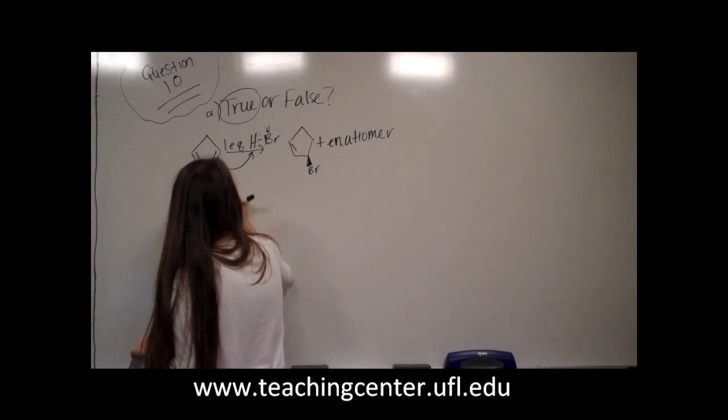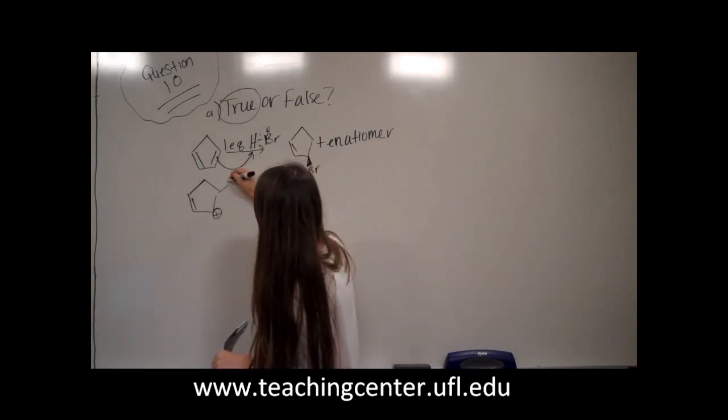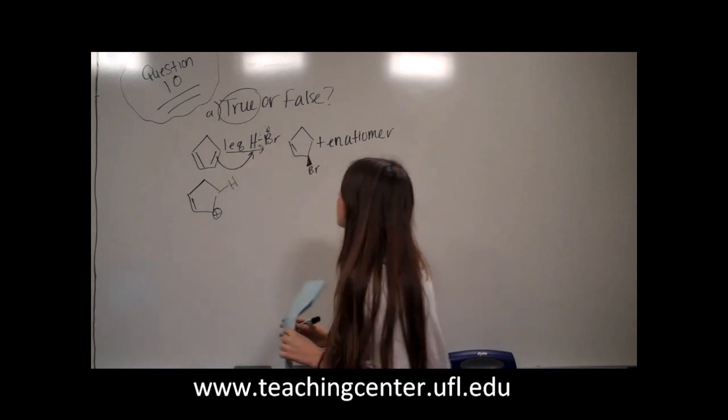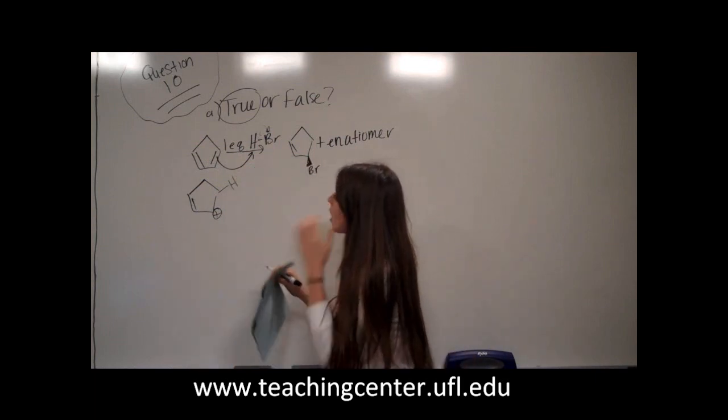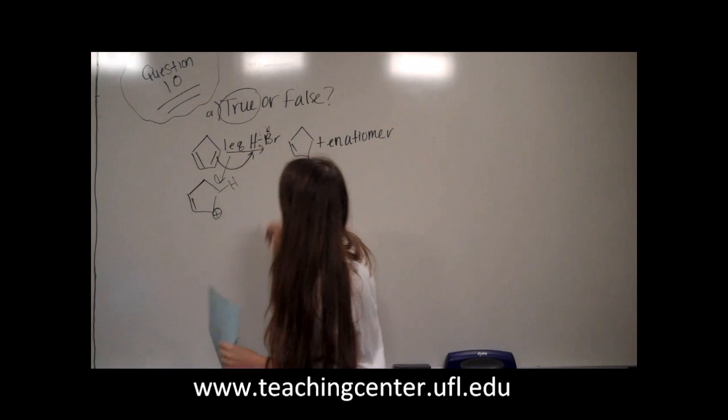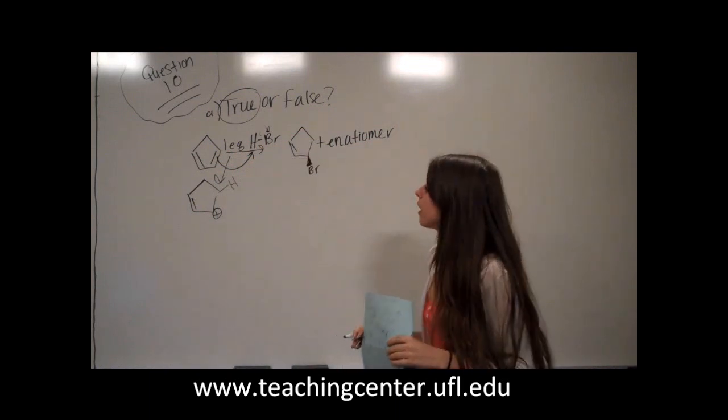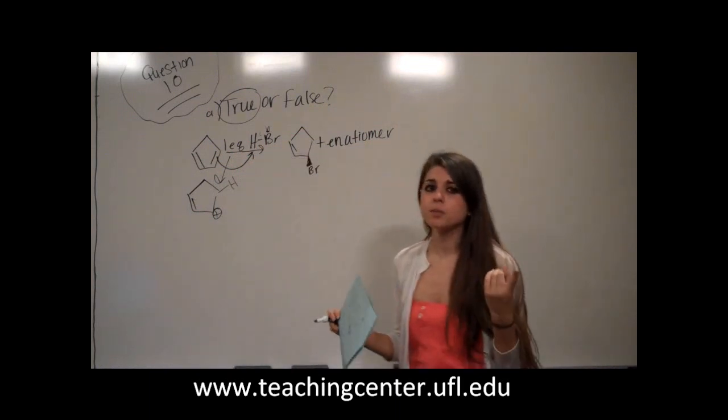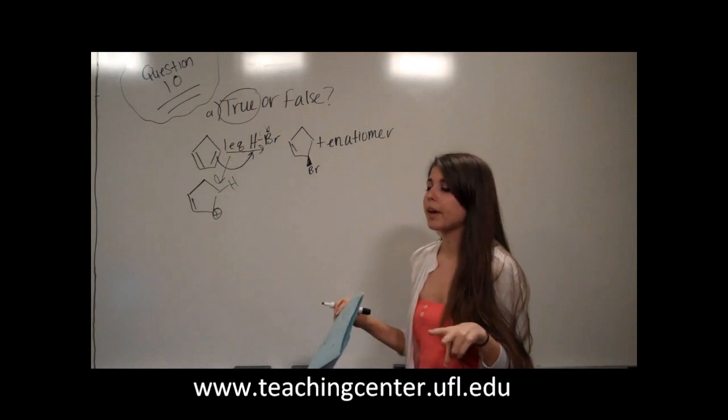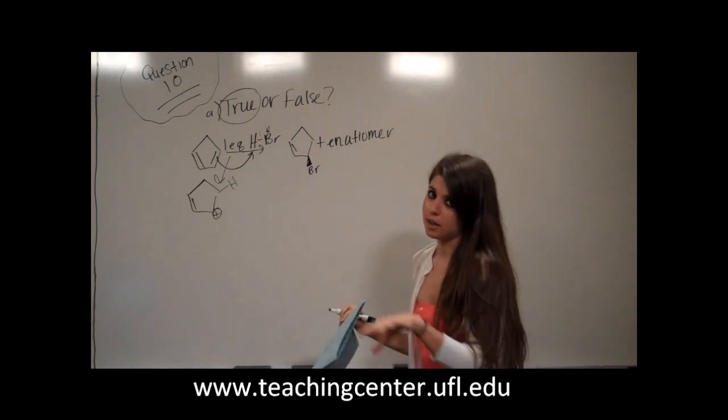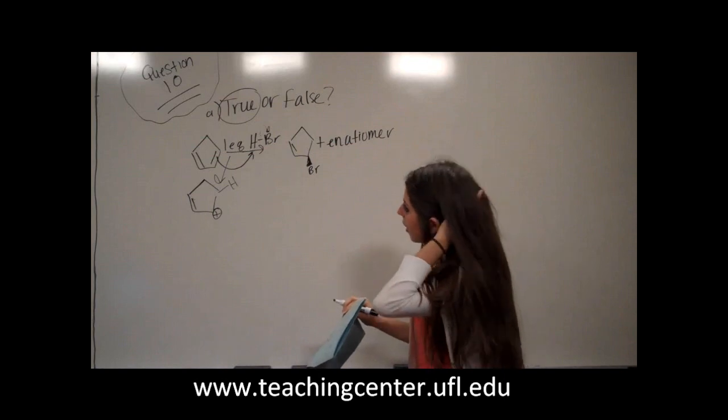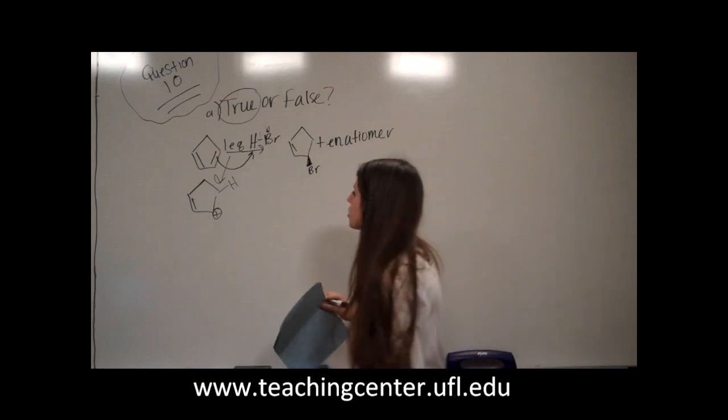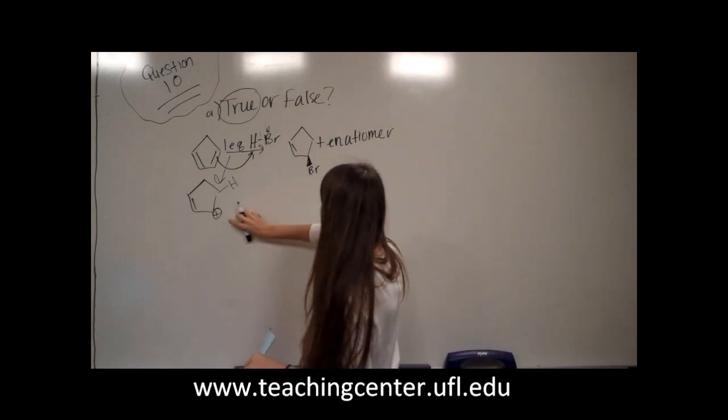And this actually makes sense. So that would mean our H was added there. This makes sense because looking at our stability trend, benzylic is most stable, allylic is the second best, then tertiary, secondary, primary, and then the least stable would be your methyl. So here allylic would be more...